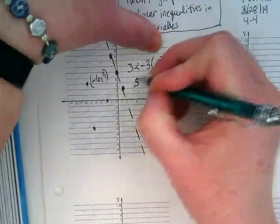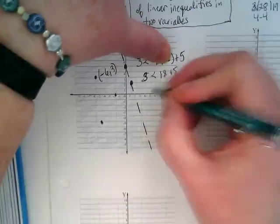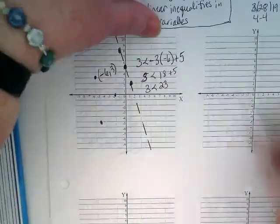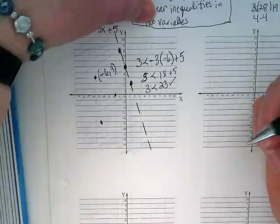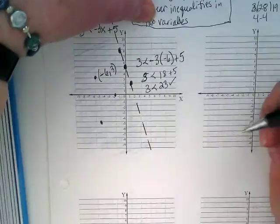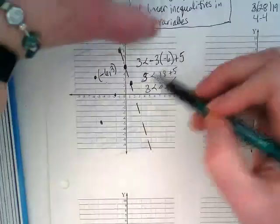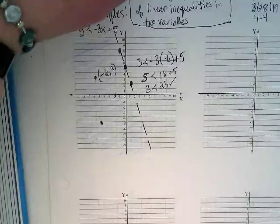Positive 18 plus 5. 18 plus 5 is 23. So 3 is less than 23. Is that a true statement? Yes. And so that's a way to check and make sure that the area you shaded actually has answers for that inequality. We could have chosen any point in here and taken that x and y and plugged them into the original inequality.